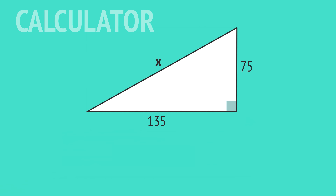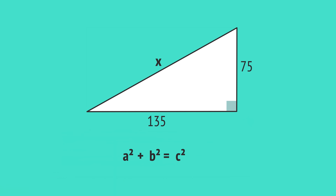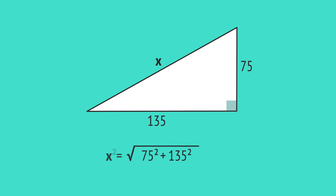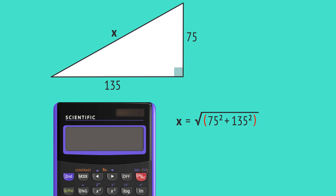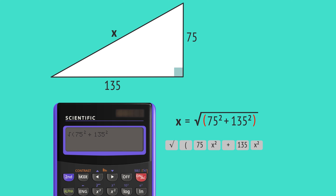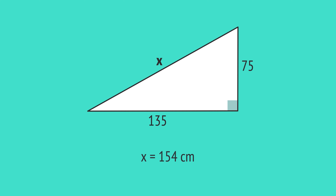We can get to the answer more quickly on a calculator as follows. To work out the longer side, simply substitute the values into the formula and take the square root to get x by itself. On the calculator, be sure to use brackets around the part underneath the square root. Enter as: square root, open brackets, 75 x squared, plus 135 x squared, close brackets, equals, which gives x equals 154 when rounded to the nearest whole number.